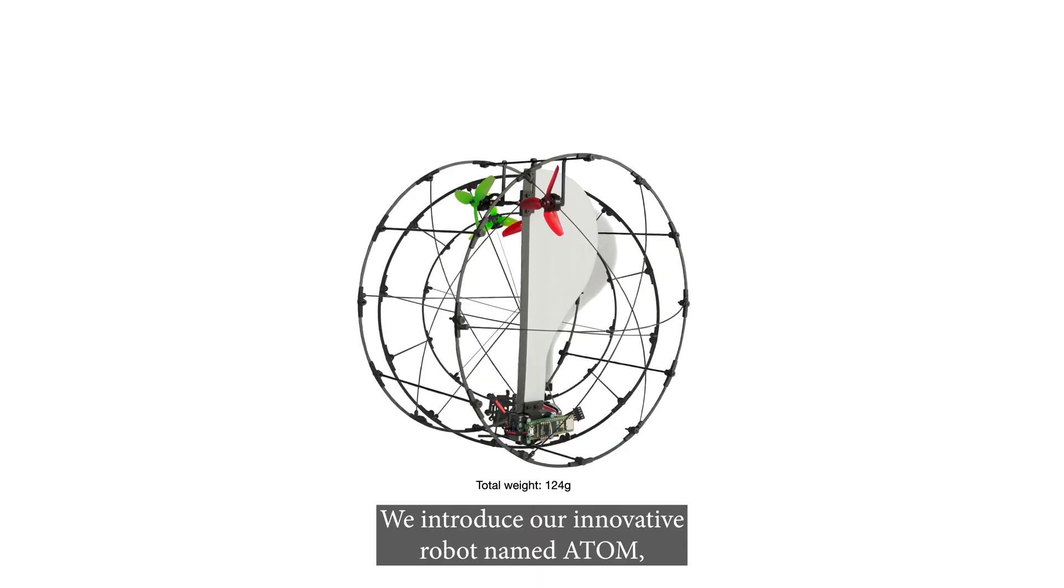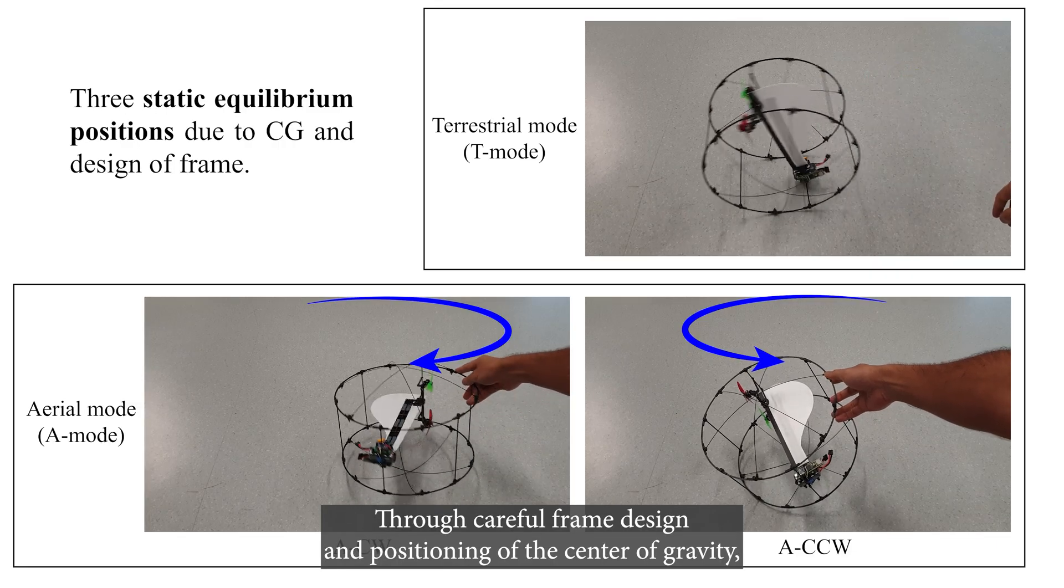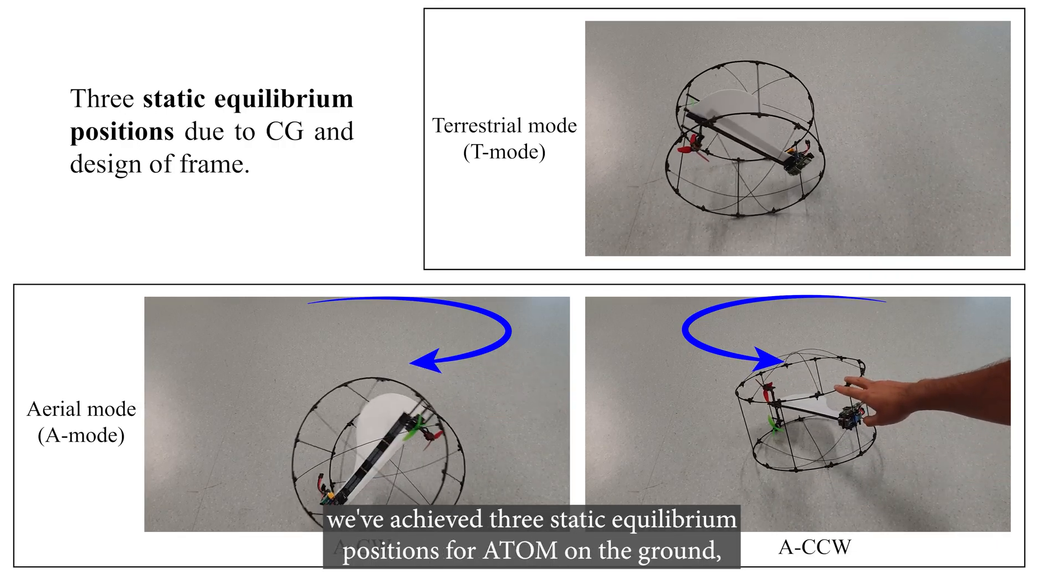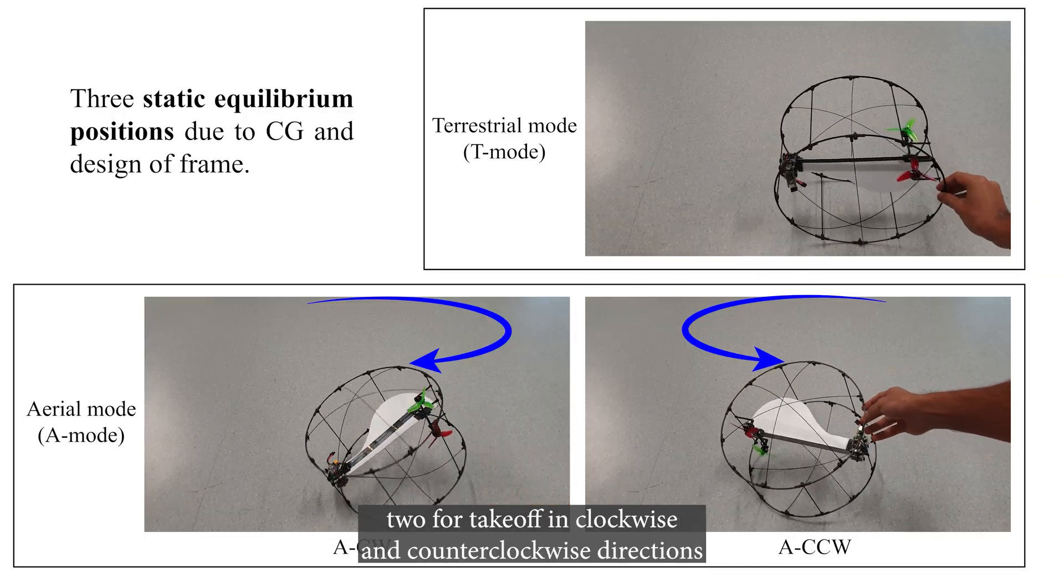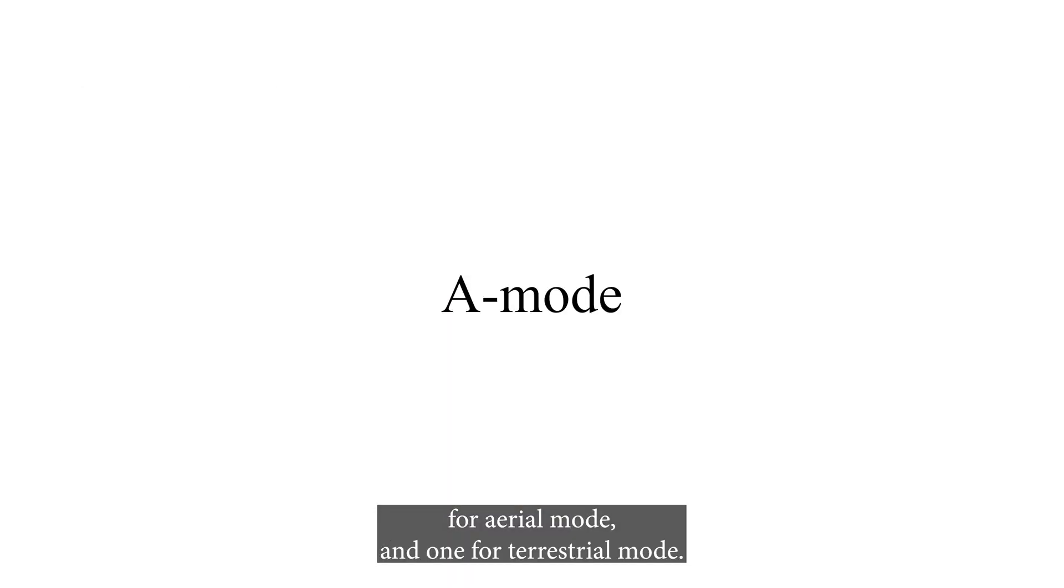We introduce our innovative robot named Adam, short for aerial and terrestrial mode operating mono-wing. Through careful frame design and positioning of the center of gravity, we've achieved three static equilibrium positions for Adam on the ground: two for takeoff in clockwise and counterclockwise directions for aerial mode, and one for terrestrial mode.